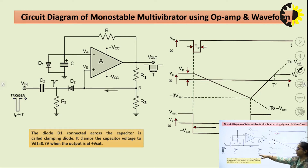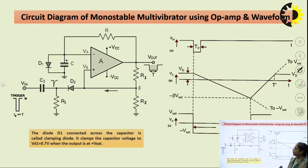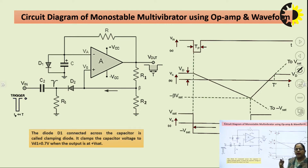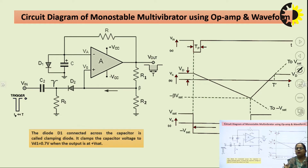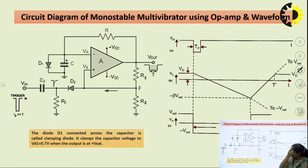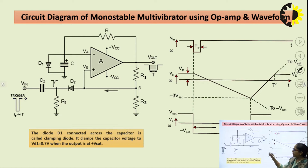Here we have the circuit diagram of monostable multivibrator using an operational amplifier, along with the related waveforms. This monostable multivibrator is being realized with op-amp here, but the same can also be realized using the 555 timer IC. Here we are using a 741 op-amp IC; with the 555 timer IC, we would get more accuracy since it is dedicatedly designed for timing applications.